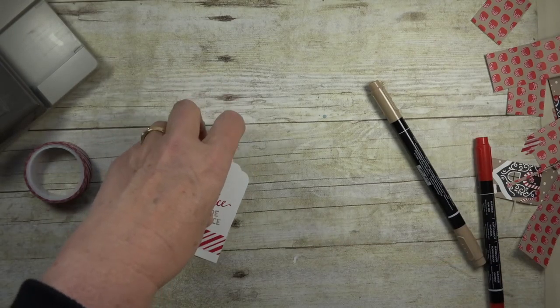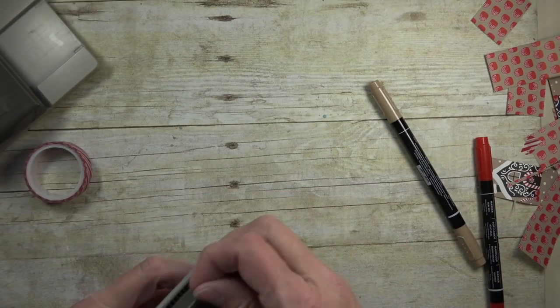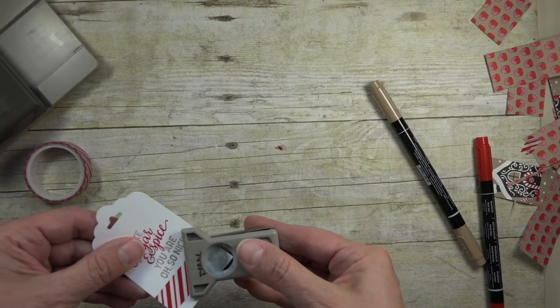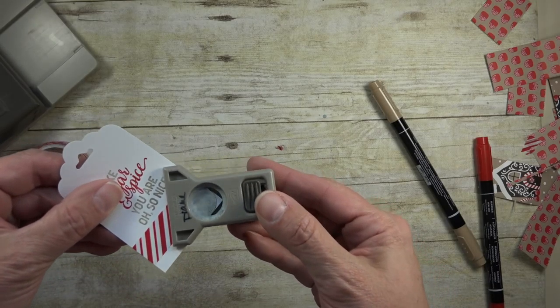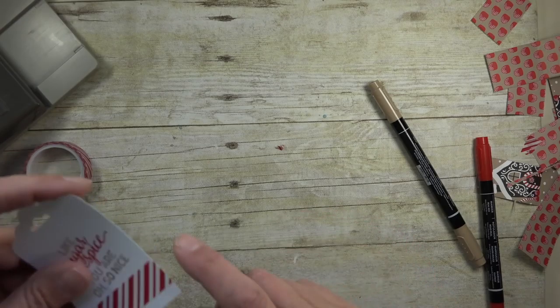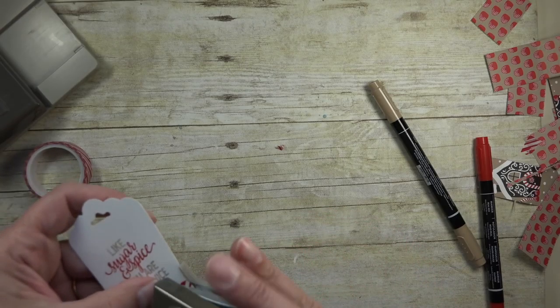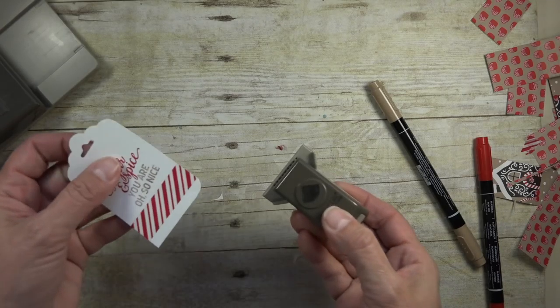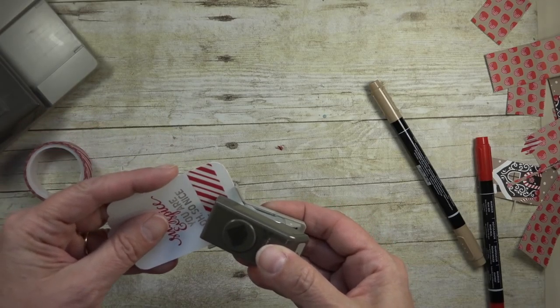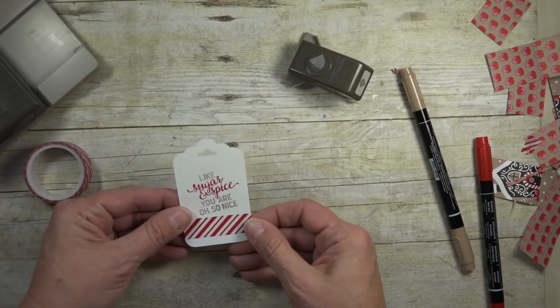To finish off my tag even just a little bit more, I can come in with our project life corner rounder and I'm going to slide that in there. You can see that corner comes right through there. As long as these edges are butted up against the edge of that punch, you're good. You're probably right where you need to be. That gives it a little bit of finishing touch.